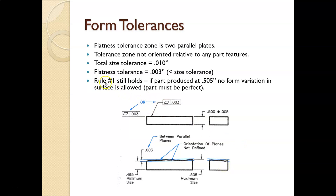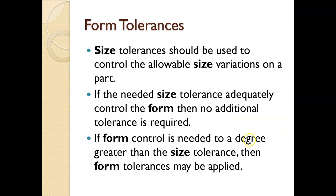The two parallel planes can float within the maximum size of 0.505 and the minimum size of 0.495. Rule number one says that if the part is produced at its maximum material condition — 0.505 inches thick — it must have perfect form. So at MMC there's no room for flatness tolerance variation, because you're already at the top.